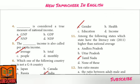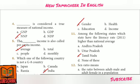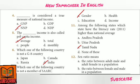Fourth question: Dash is considered a true measure of national income — Answer Option C: NNP. Fifth question: The dash income is also called per capita income — Answer Option A: Average.